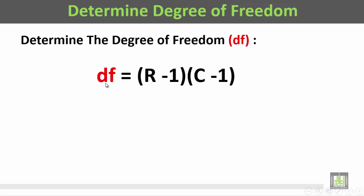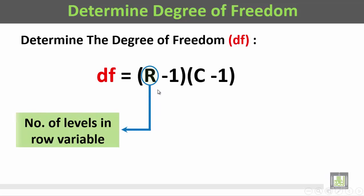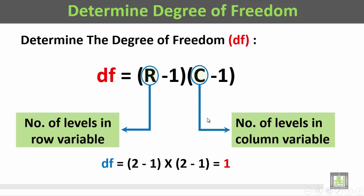R is the number of levels in the row variable, while C is the number of levels in the column variable. We have two rows and two columns. Two rows minus one equals one, and two columns minus one also equals one. So one times one equals one. The degree of freedom is equal to one.